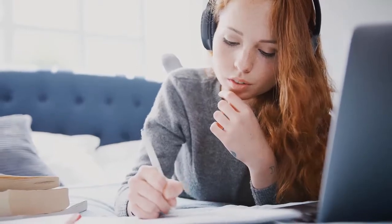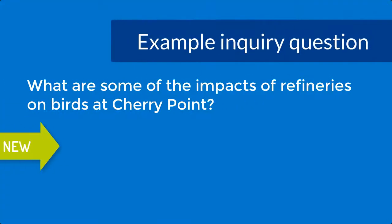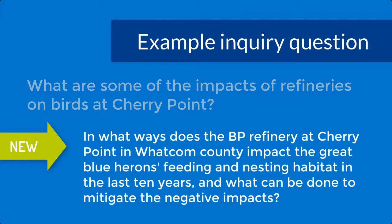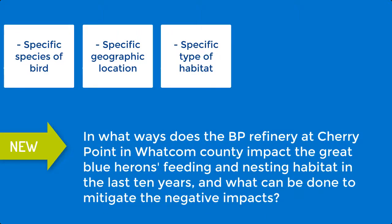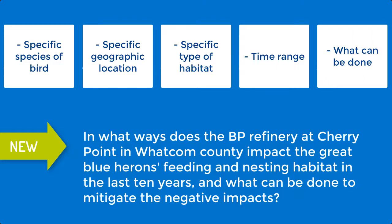Wherever specifics can be added, that will help when looking for sources. With the revised inquiry question, I refined it to ask: 'In what ways does the BP refinery at Cherry Point in Whatcom County impact Great Blue Heron feeding and nesting habitat in the last 10 years, and what can be done to mitigate the negative impacts?' Now I have a specific species of bird, a specific geographic location, a specific type of habitat, a time range, and a question about mitigation. These specific variables will help keep me focused in research and writing, and once I get into the research, I can start asking sub-questions that help locate sources and build out the sections of my paper.